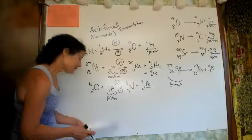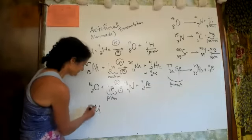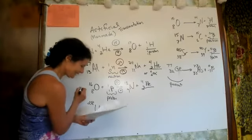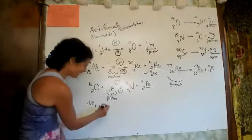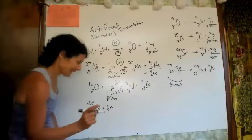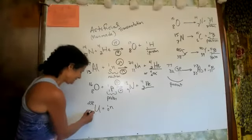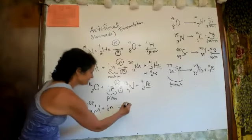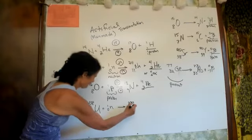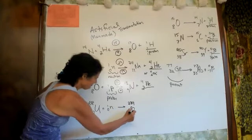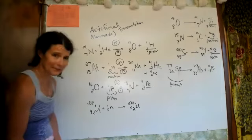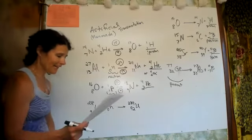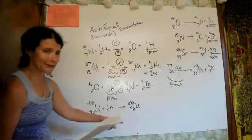About 100 years ago, they took uranium and shot a neutron at it. It absorbed the neutron and just formed uranium-239. Then uranium-239 goes through two beta decays: first to neptunium-239 (element 93), then neptunium decays by beta decay to form element 94 — that's how they made plutonium.